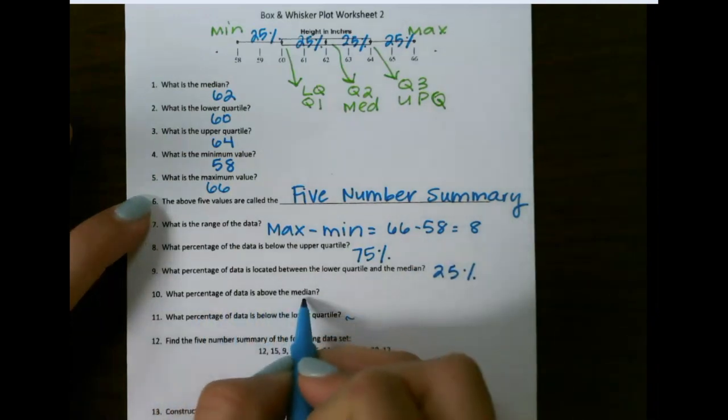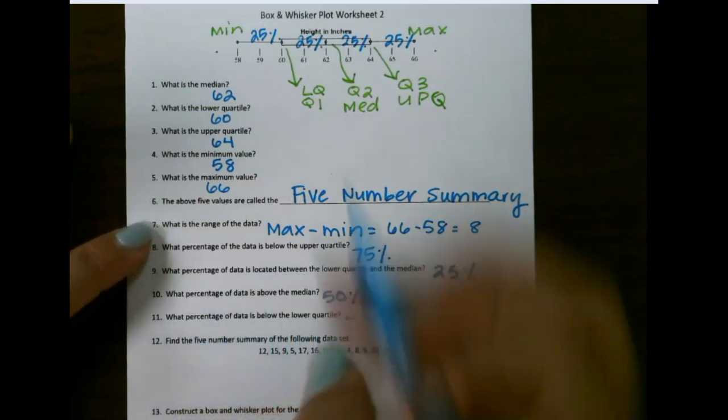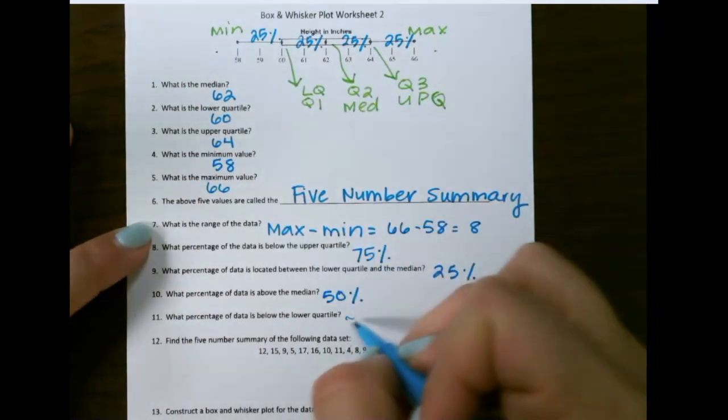The percentage of data that's above the median is 50%, and the percentage of data that is below the lower quartile is only 25%.